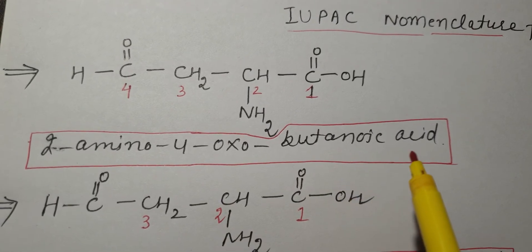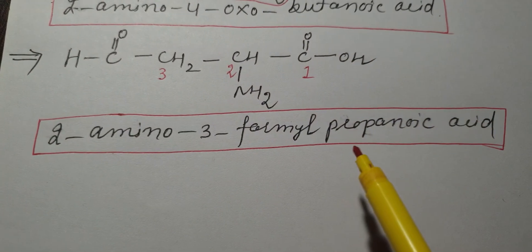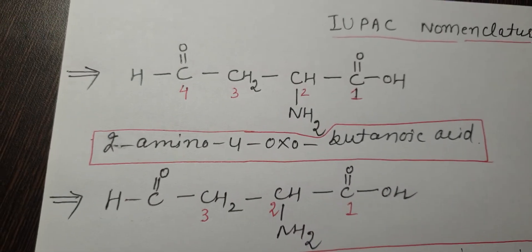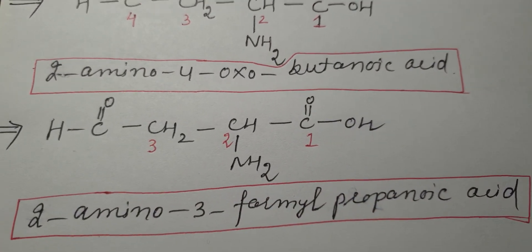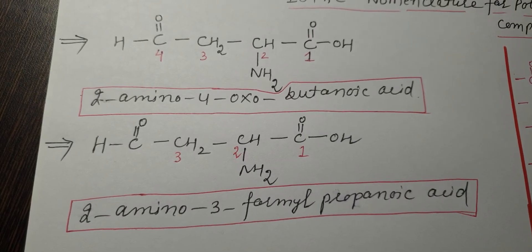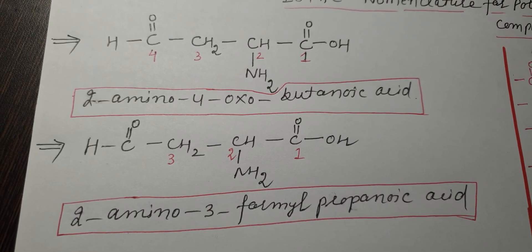Remember, this is butanoic acid and this is propanoic acid. So we can number the same compound in two different ways and name it in two different ways. Thank you.